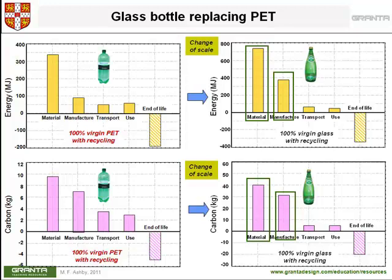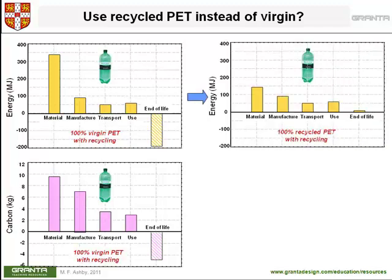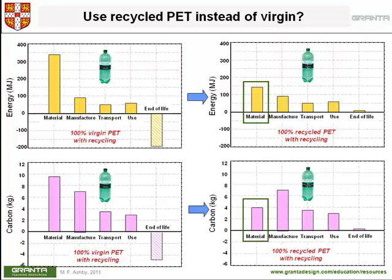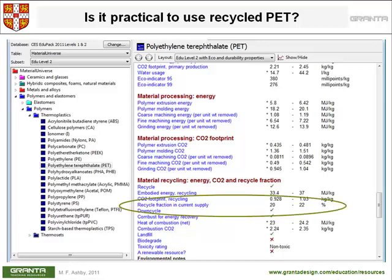Let's try something else. Supposing instead of using virgin PET, we replaced it with recycled PET. That's straightforward in the tool — you just choose recycled PET when entering the material. There's a dramatic fall in the energy associated with the material by a factor of about 2, and a corresponding fall in the carbon emissions associated with the bottle. So this does look like a good idea. If we go back to the record for PET and scroll down to material recycling, we find an entry for recycle fraction in current supply. About 20% — about a fifth of all PET currently used — is recycled PET. So it does appear to be practical to use recycled PET.